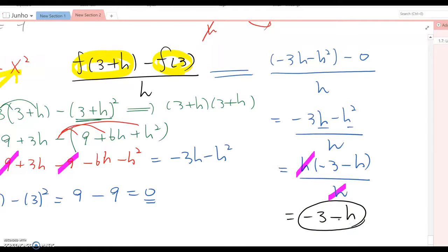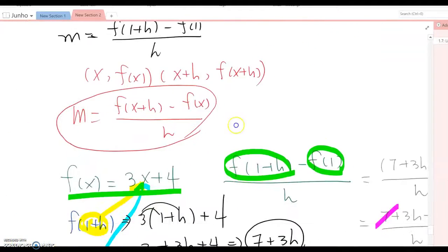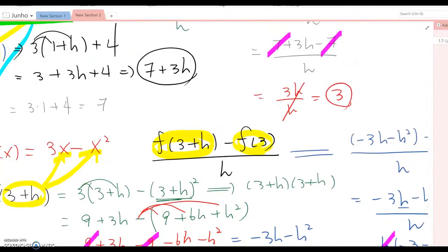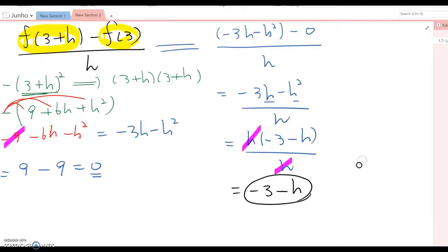Before, we got negative 3 minus h, right?